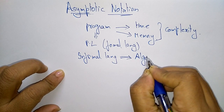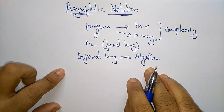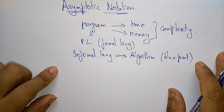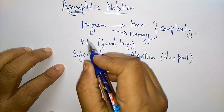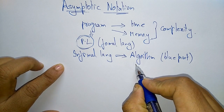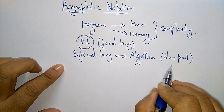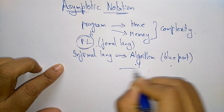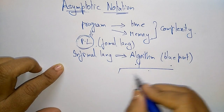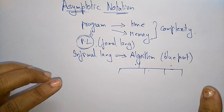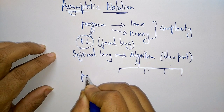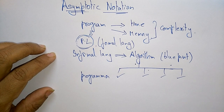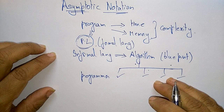An algorithm is a step-by-step process — you can simply call it a blueprint. I already explained this at the start of this subject. Before developing the programming language, you first write the algorithm, which gives a blueprint of the program. Different algorithms will exist for a program, and the programmer has to select which algorithm is best suited.